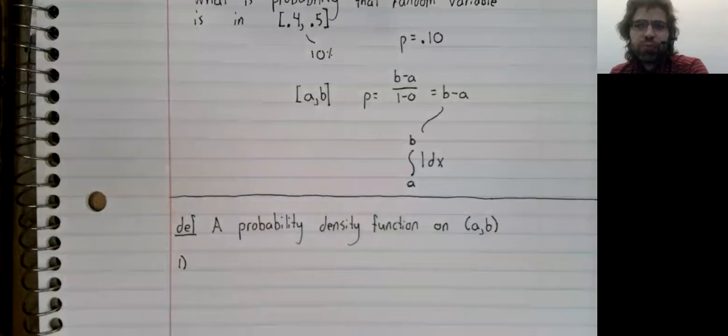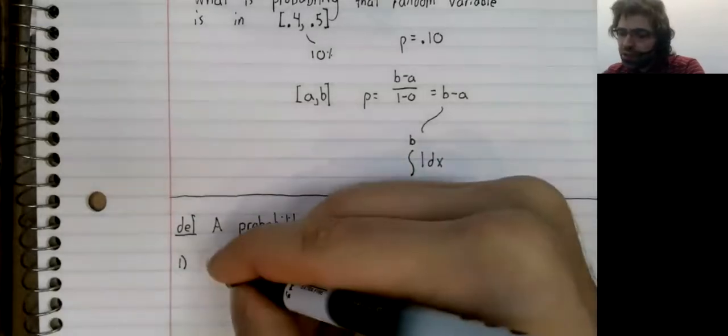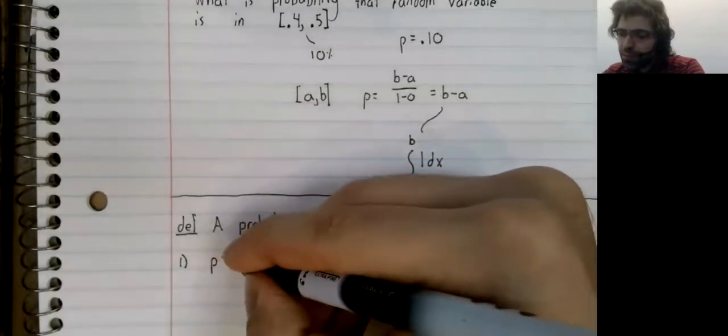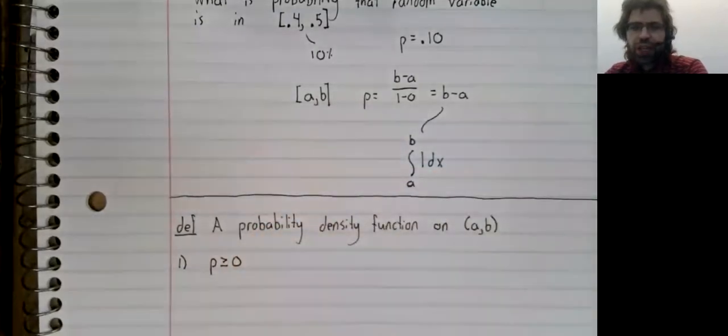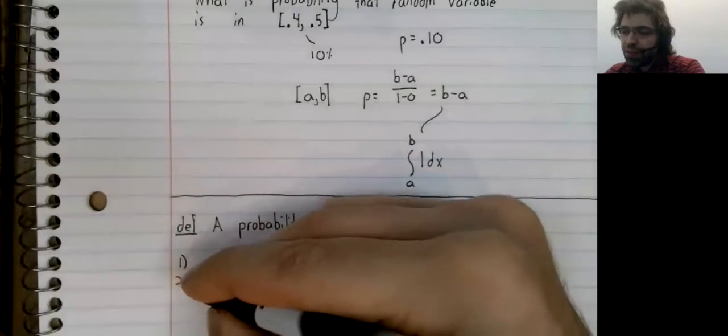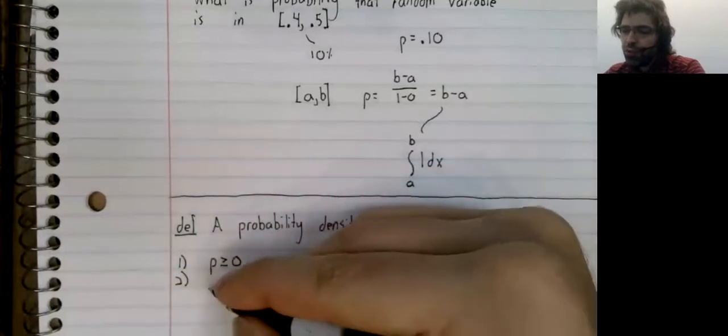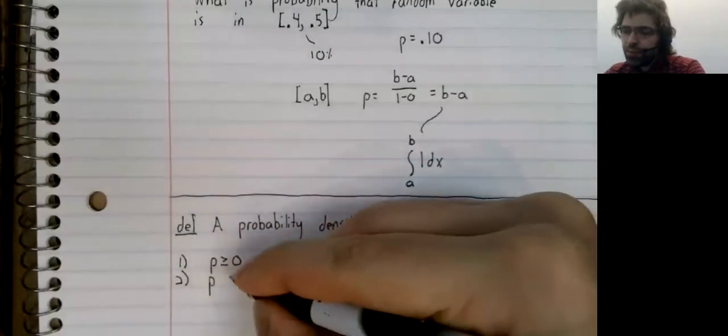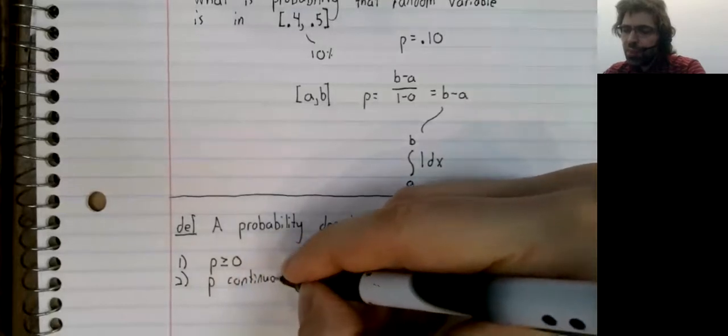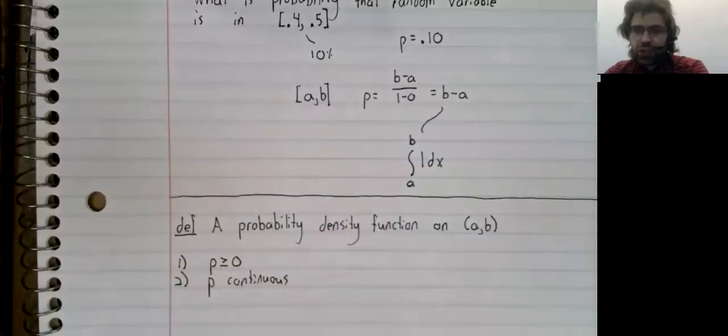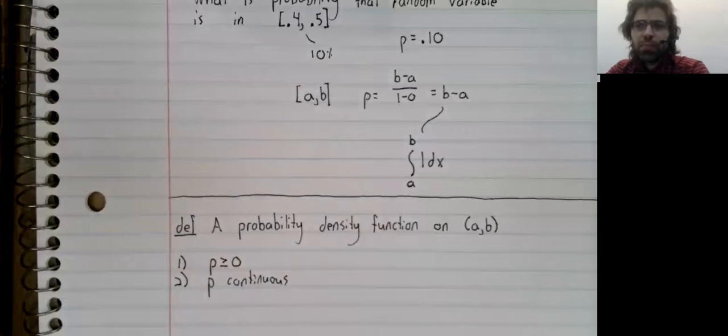First, it can never be negative. Two, it has to be continuous, except perhaps at a finite number of values.